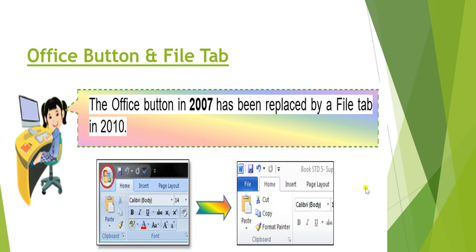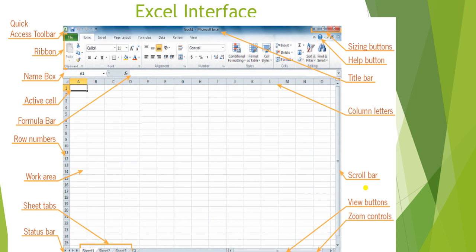Now let us see how Microsoft Excel looks - the Excel interface. We have the title bar at the top, and on the right-hand side we have sizing buttons like minimize, maximize, and close, plus a help button. On the left-hand side we have the quick access toolbar, then the File tab. This is called the ribbon where all the groups are included. This is the name box where you can see which cell is active.